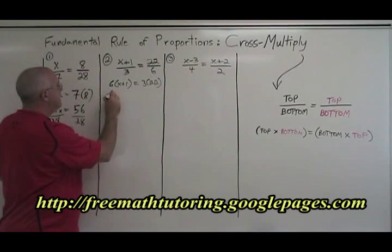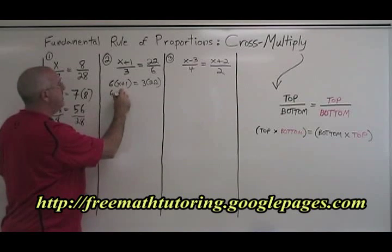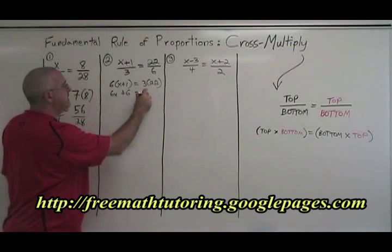Simplifying. 6 times x, 6x. 6 times 1, 6 equals 3 times 22, 66.